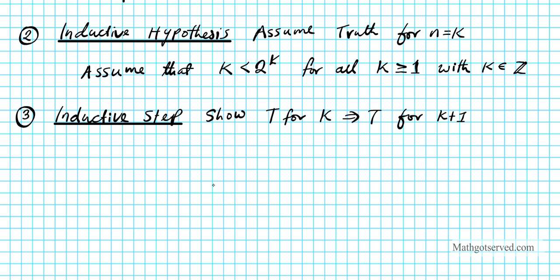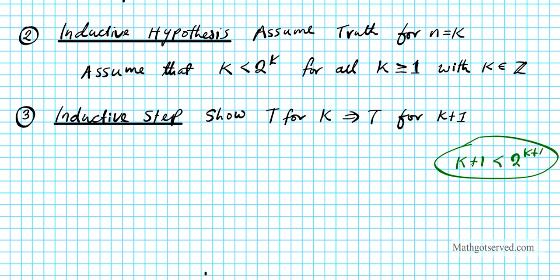This is the end goal: I want to be able to state that k plus 1 is less than 2 to the k plus 1. Notice how the inductive hypothesis gives k is less than 2 to the k. If I can show that k plus 1 is less than 2 to the k plus 1, that demonstrates that for every step we take we are guaranteed to arrive at a true statement.